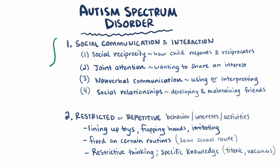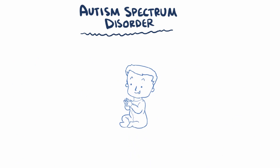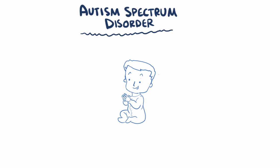Children with autism spectrum disorder might exhibit one or more of these deficits, and vary in how severe the deficit is. With that in mind, it's important to remember that each child with autism spectrum disorder is going to have a different spectrum of symptoms and deficits.